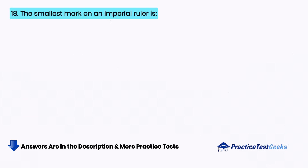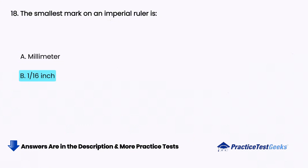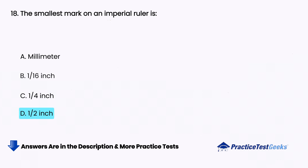The smallest mark on an imperial ruler is: A. Millimeter, B. One over 16 inch, C. One fourth inch, D. One half inch.